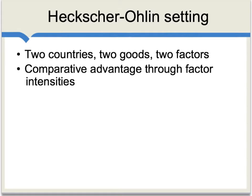There are more specific and more formal versions of factor-price equalization theorems, and they tend to be put in what's called a Heckscher-Ohlin setting. That is, we can postulate two countries, two goods, and two factors, and each of those two countries will have some comparative advantage based on whether it has more capital or more labor. For more on this, see our videos on the Heckscher-Ohlin theorem.